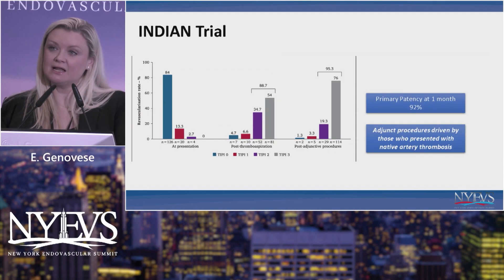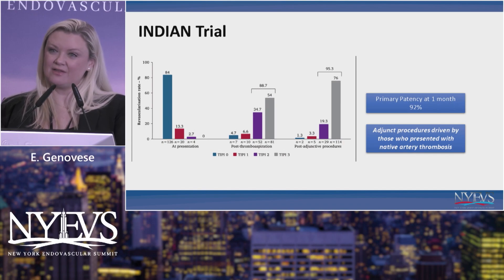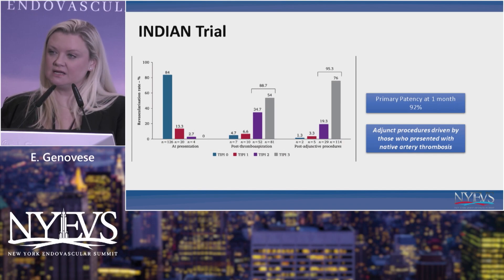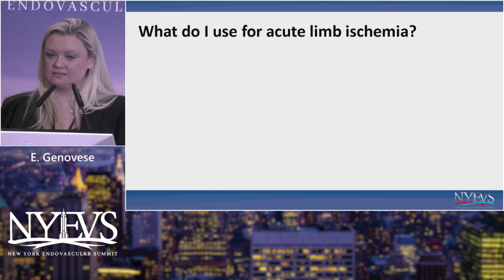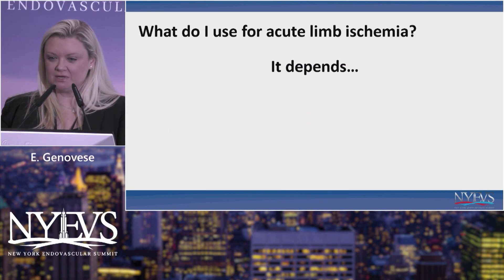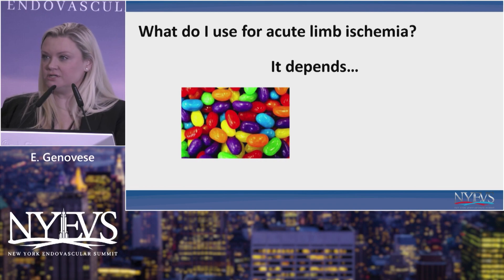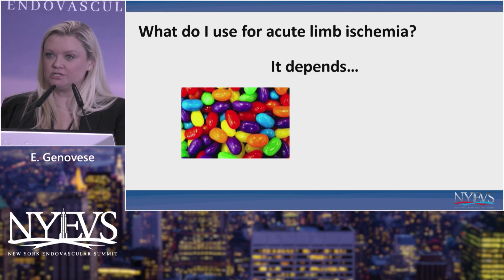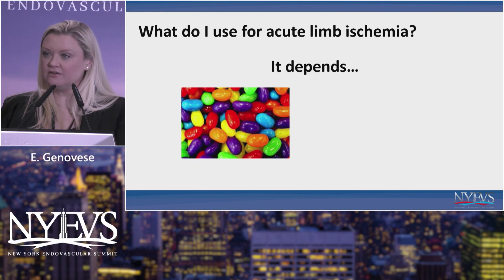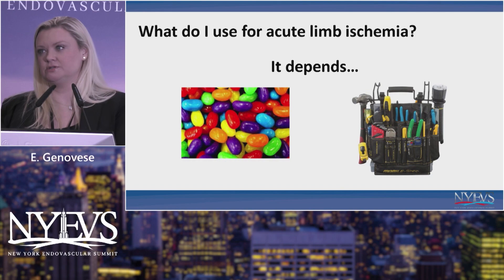A pretty great success rate — almost 90% from this catheter alone, and 95% success once you use adjunctive techniques. So what do I use for acute limb ischemia? It actually depends. We have a very heterogeneous patient population with a lot of different etiologies and lots of tools in our tool bag. Things I think about going into a case: what's the etiology, is it a chronic or acute clot, what's the extent of the thrombus, is there underlying disease in the vessels?